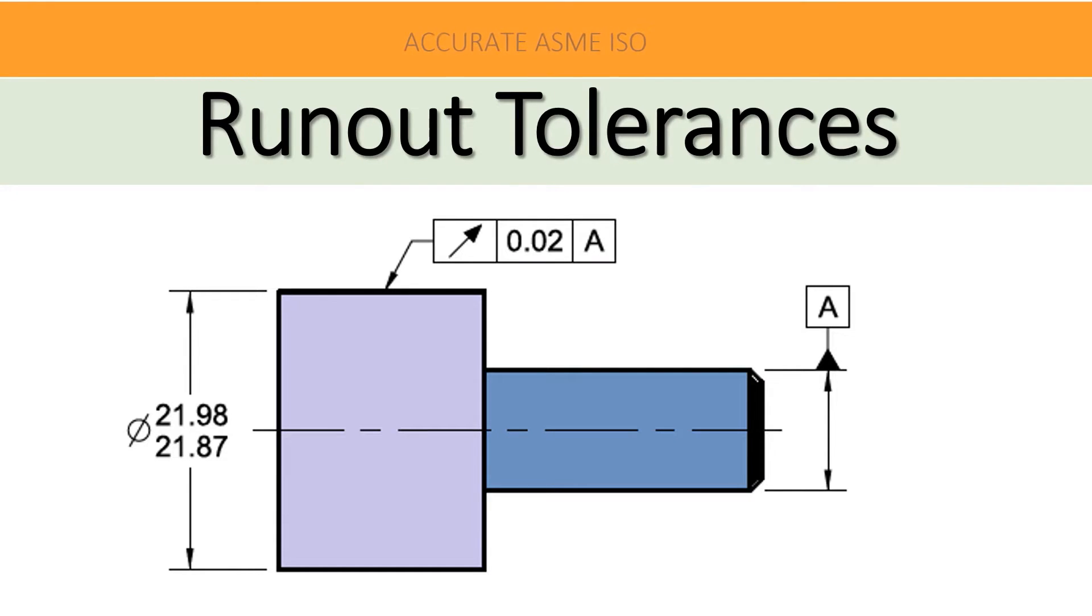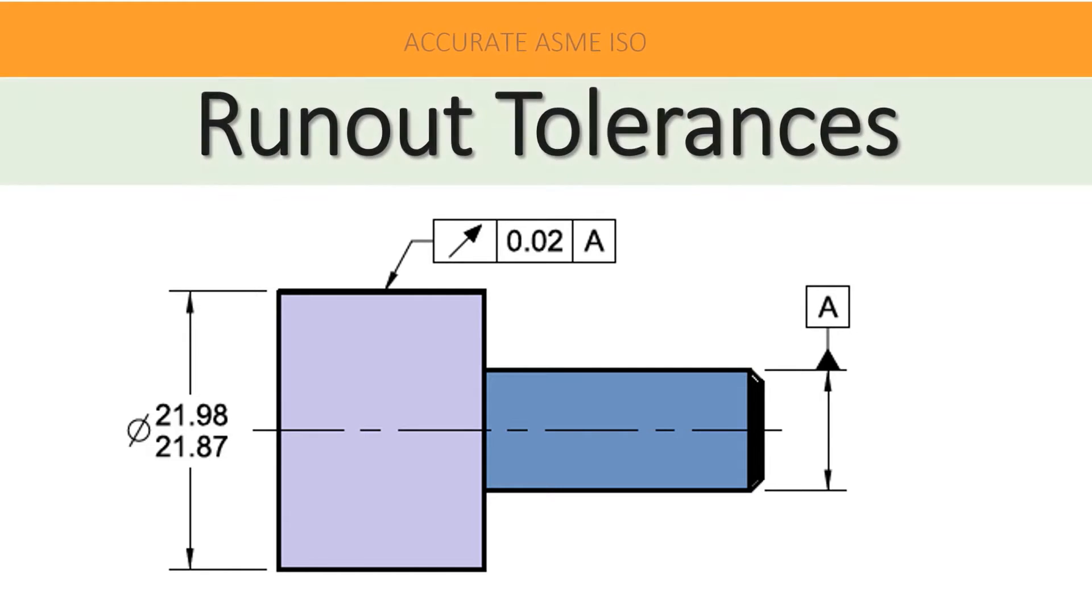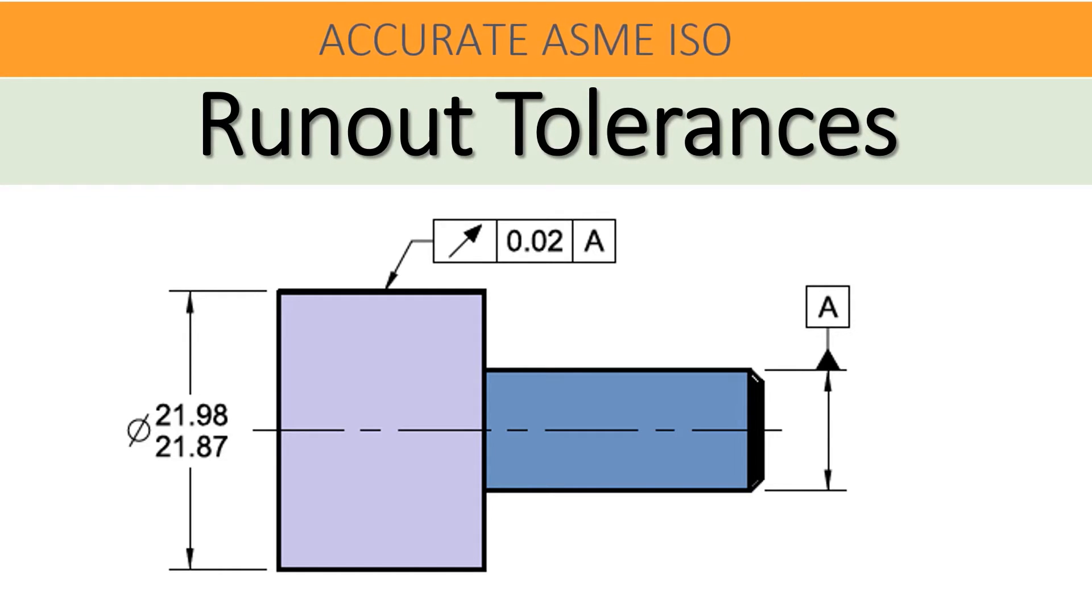Hello friends, welcome to our YouTube learning channel Accurate ASME ISO. In this video we shall learn circular runout tolerances. Runout tolerances are also known as composite tolerances because runout tolerances include form and concentricity simultaneously. Let us begin now.